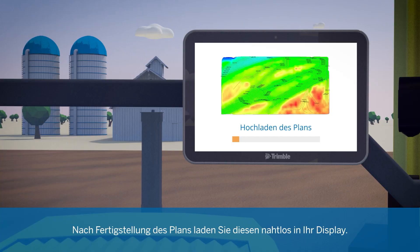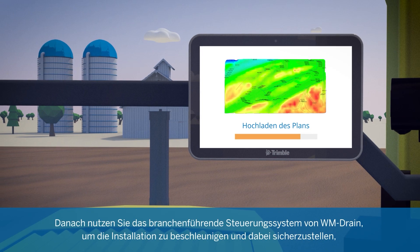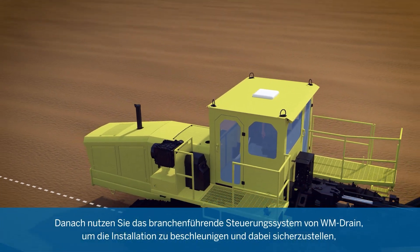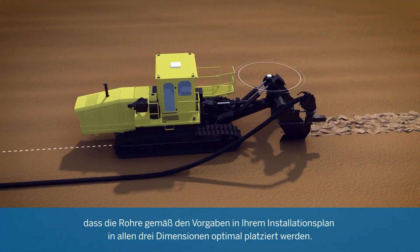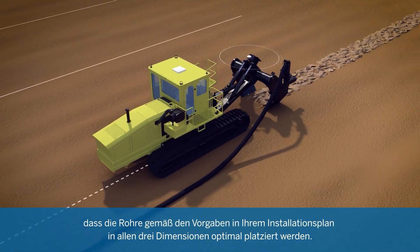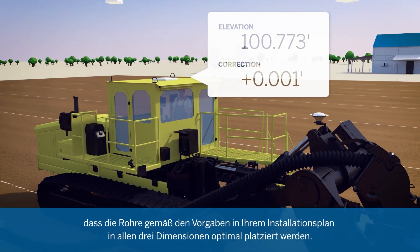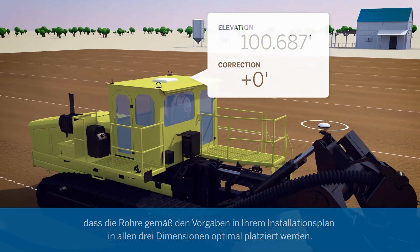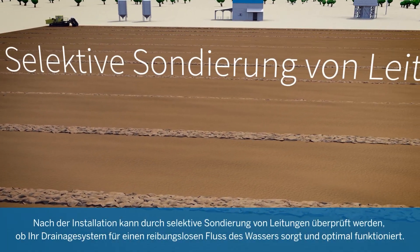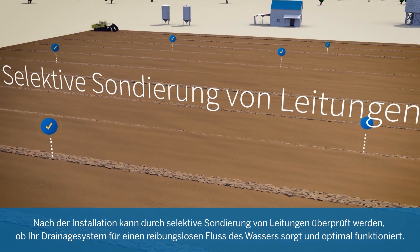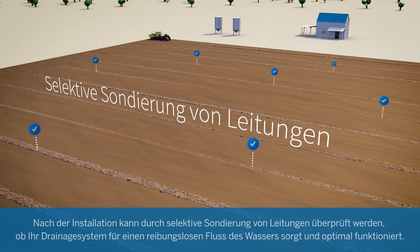Once your design is complete, seamlessly upload it to your display. Then use WM Drain's industry-leading control system to increase installation speed, while ensuring optimal 3D tile placement as specified by the user-defined constraints entered in your subsurface drainage system design. After installation, selective line probing can verify that your drainage system will provide smooth water flow and optimal system performance.